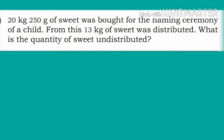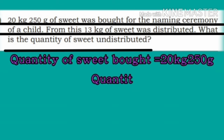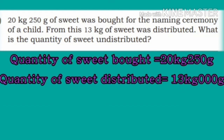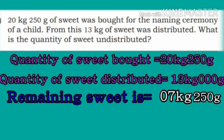Fourth problem: 20 kg 250 grams of sweets were bought for a naming ceremony. From this, 13 kg of sweets was distributed. What is the quantity of sweets undistributed? Quantity bought: 20 kg 250 grams. Quantity distributed: 13 kg 0 grams. Subtract grams: 250 minus 0 equals 250. Subtract kilograms: 20 minus 13 equals 7 kg. Remaining sweets: 7 kg 250 grams.